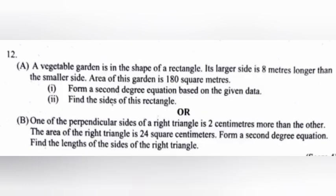Or B. One of the perpendicular sides of a right triangle is 2 centimeters more than the other. The area of the right triangle is 24 square centimeters. Form a second degree equation. Find the length of the side of the right triangle.